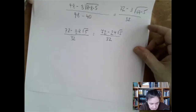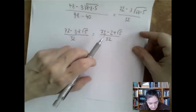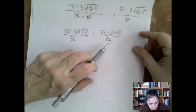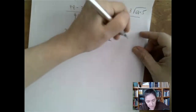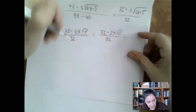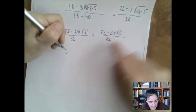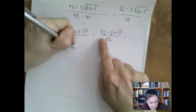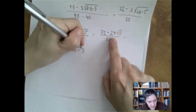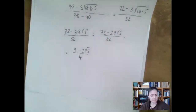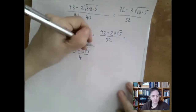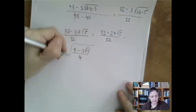We can further simplify because everything is divisible by 8. If we divide everything by 8: 72 is 8 times 9, 24 is 8 times 3, and 32 is 8 times 4. So this would be the answer.